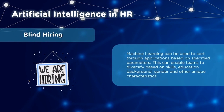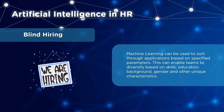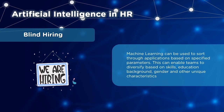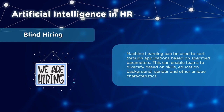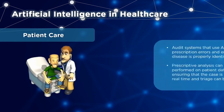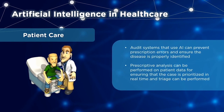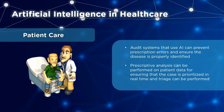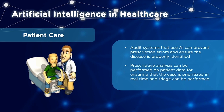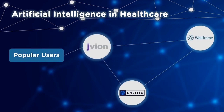In human resources, companies use AI software to ease the hiring process through blind hiring. Machine learning software sifts through applications based on specific parameters, and AI can scan candidates' profiles and resumes to provide recruiters an understanding of the talent pool. In healthcare, AI is used in patient care to prevent prescription errors caused by slips or mistakes in dosages — audit systems using AI help prevent such errors. Popular uses include Javion, Analytic, and Wellframe. AI also assists with medical imaging and diagnostics, enabling early diagnosis of chronic conditions and transforming medical images to create models for possible scenarios.